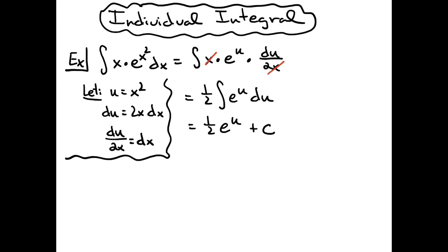And then for our last step, we will replace u with what we originally said it was equal to. So we're going to have 1/2 e raised to the x squared and then plus c. When worked out using the substitution method, this is a straightforward integral typically found in a Calc 1 class.